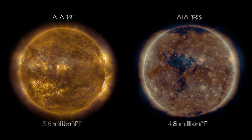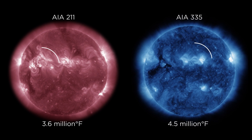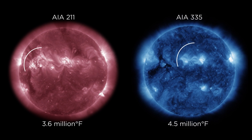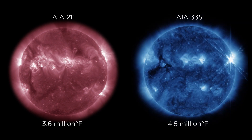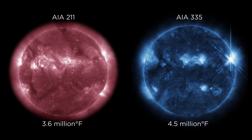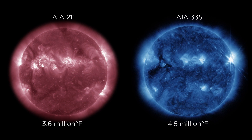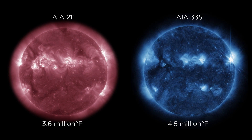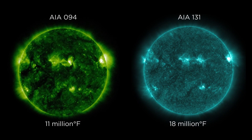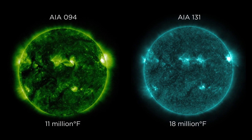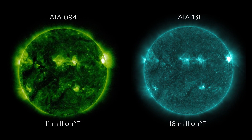The wavelengths here reveal the sun's active regions, which have intense magnetic activity that sometimes give rise to eruptions. These wavelengths can see the hottest material in a solar flare.